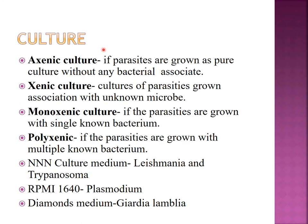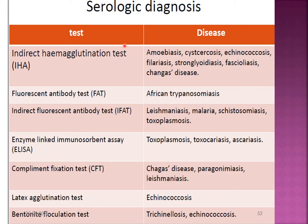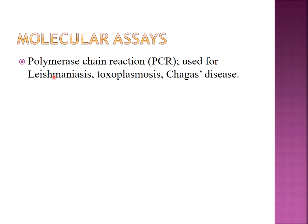Parasites can be cultivated in the laboratory. Culture types include axenic culture (pure culture without bacterial associate), xenic culture (parasites grown with unknown microbes), monoaxenic culture (grown with single bacterium), and polyaxenic culture (grown with multiple bacteria). Triple N culture medium is used for Leishmania and Trypanosoma; RPMI 1640 is used for Plasmodium; and Diamond's medium is used to grow Giardia lamblia. Serological techniques are available for antigen and antibody detection, though not very sensitive or specific for parasites. Molecular assays such as PCR are available for diagnosis of Leishmaniasis, Toxoplasmosis, and Chagas disease.